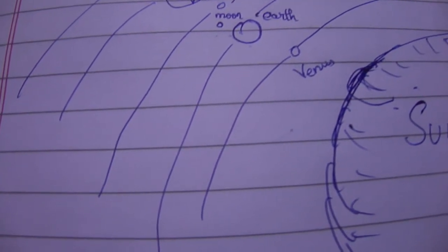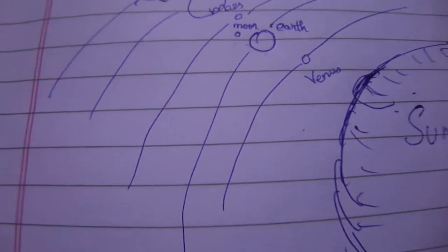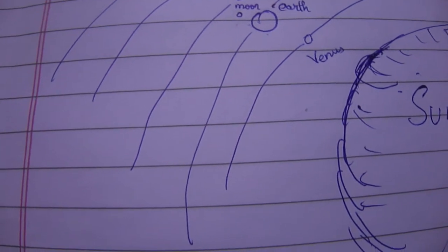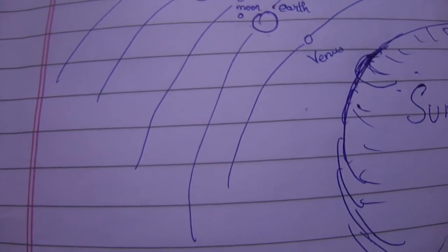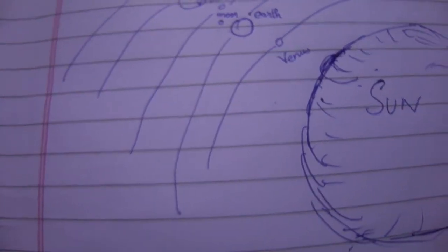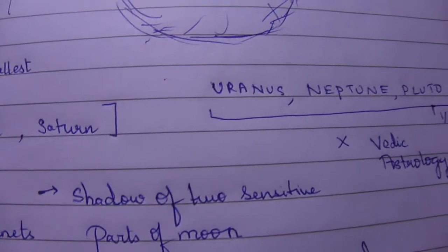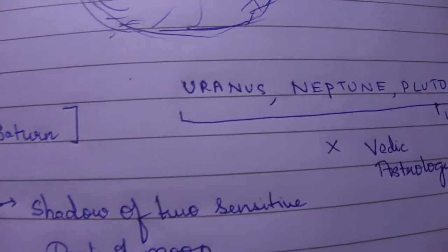Now, about Rahu and Ketu. Another important point is that Uranus, Neptune, and Pluto are not considered as planets in Vedic astrology because they were discovered much later.